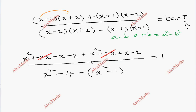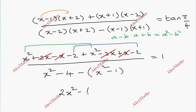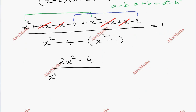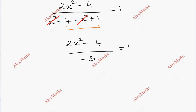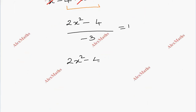This gives x squared minus 1 squared equals 1 in the denominator. In the numerator, 2x minus 2x cancels, and x minus x cancels, leaving 2x squared. So 2x squared plus 2x squared — actually 2 minus 2 gives minus 4. So minus 2 minus 2 equals minus 4. Denominator is x squared minus 4, minus x squared plus 1 equal to 1.